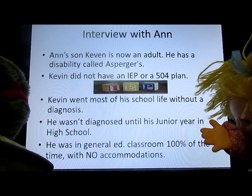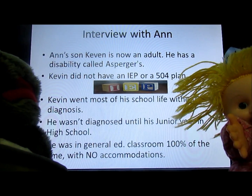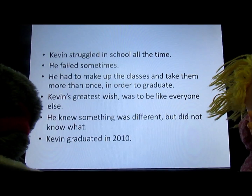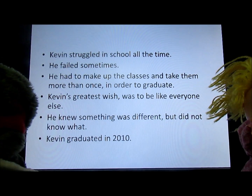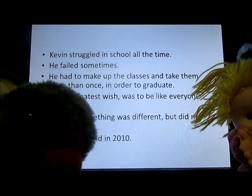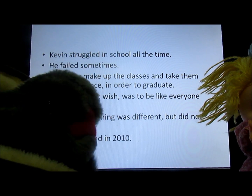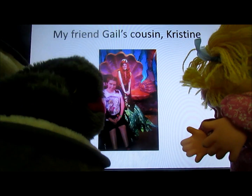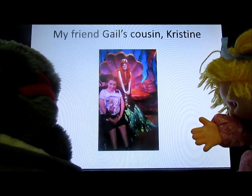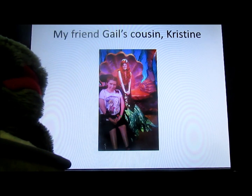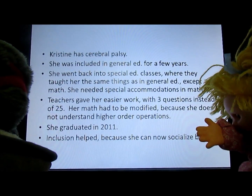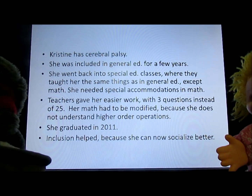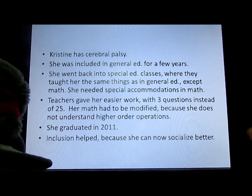Then I interviewed Ann. Ann had a son named Kevin. Kevin did not have an IEP or a 504 plan. Kevin's greatest wish was to be like everyone else — that's like me, I want to be like everyone else too. That's my friend Gail's cousin, Christine. Christine had cerebral palsy. She was included in general ed for a few years. Inclusion helped her because she can now socialize better.